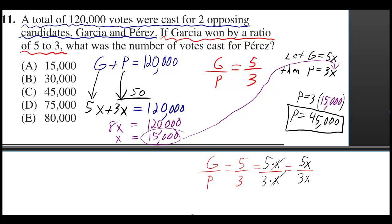If you solve, you get 15,000. But that's not the answer, because they're asking for the number of votes cast for Perez. And Perez is not just X, it's 3X.